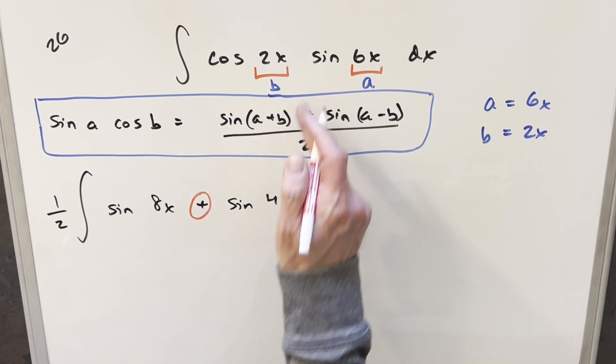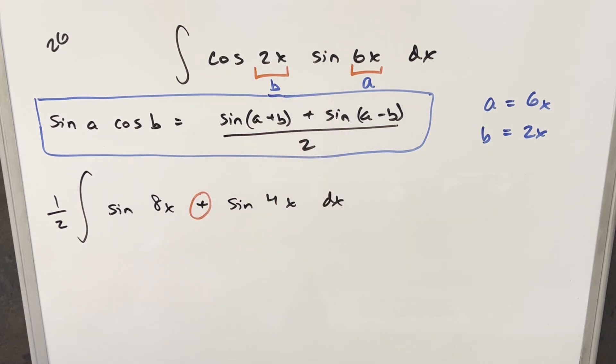But now that we're adding, instead of multiplying here, we can split this up into two easy integrals and finish it off. So we'll still have one half out front, integral of sine 8x, this is going to be minus cosine 8x over 8. And then here, integral of sine 4x, this is going to be minus cosine 4x over 4.